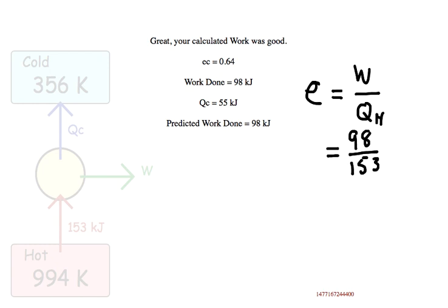So again, the big idea is that the most ideal efficient engine would be the one in which the change in entropy of the universe is zero. So the change in entropy of your hot source must be balanced by the change in entropy of the cold source.